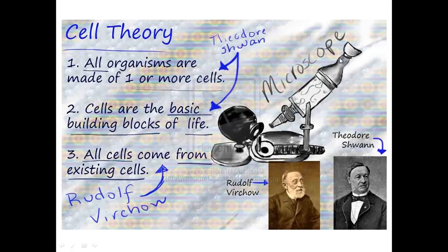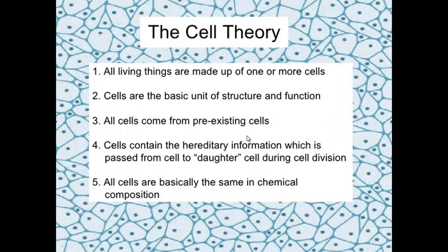There's the old microscope that Leeuwenhoek got to use. Now we have a cell theory with two new additions, made possible by better microscopes and better science. All living things are made up of one or more cells; cells are the basic unit of structure and function of life; cells all come from pre-existing cells. The two new ones: cells contain hereditary information passed on from parent cell to daughter cell during cell division — that's in the nucleus, the chromosomes — and cells have basically the same chemical composition.